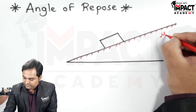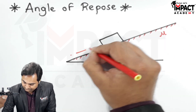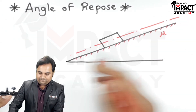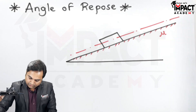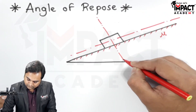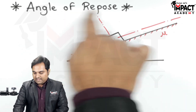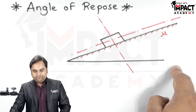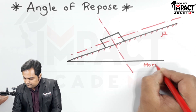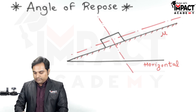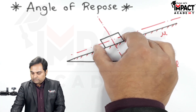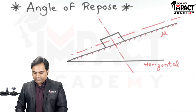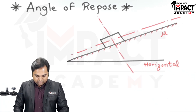This surface is rough, having coefficient of friction mu. Here I am drawing two axes — one is parallel to the plane, the other is perpendicular to the plane. The angle of repose is that angle of this inclined plane with the horizontal in which the block is just starting to slide down, or it is on the point of sliding down due to its own weight. First of all, the weight of the block —